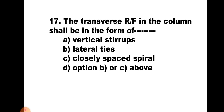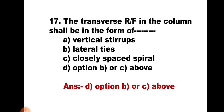Question number 17. The transverse reinforcement in the column shall be in the form of: A) vertical stirrups, B) lateral ties, C) closely spaced spirals, or D) option B or C. Vertical stirrups are not provided as transverse reinforcement, but lateral ties or closely spaced spirals can be provided. Hence the correct answer is D, option B or C.